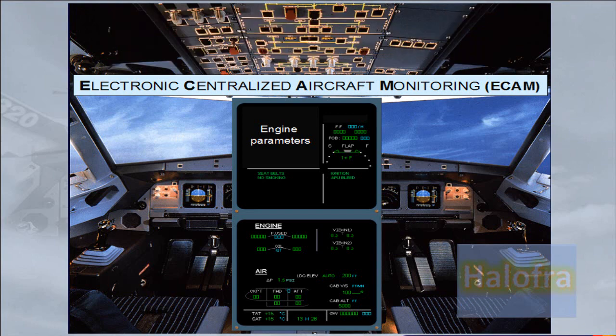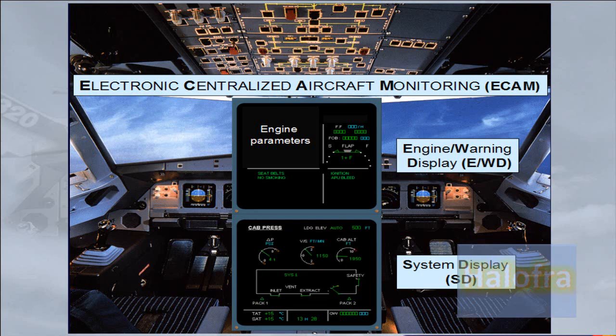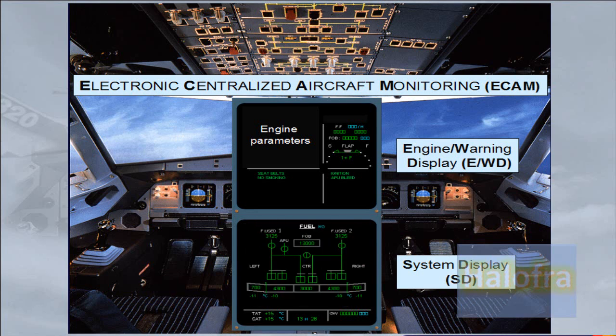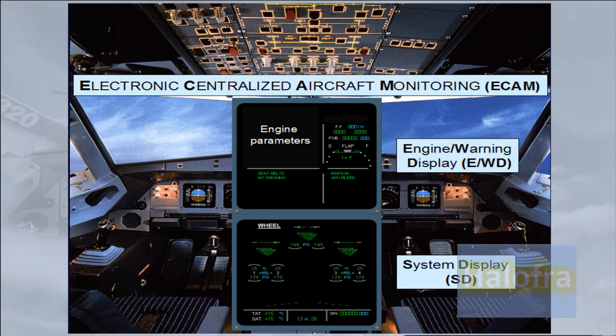The upper ECAM display is known as the engine warning display, EWD. The lower ECAM display is known as the system display, SD. It is on this screen that various aircraft system parameters can be viewed by the pilots. As an example, we will cycle through the system pages for you.